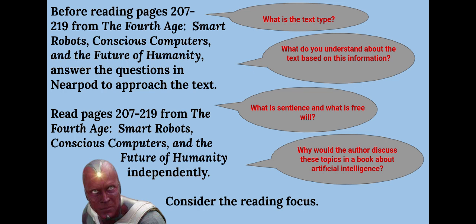Then you are going to read pages 207 to 219 from The Fourth Age independently. As you do, be sure to consider the reading focus. What is sentience and what is free will? And why would the author discuss these topics in a book about artificial intelligence?